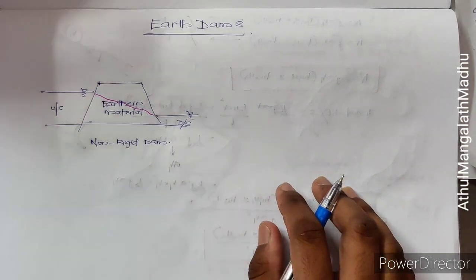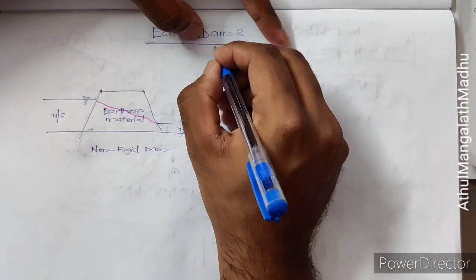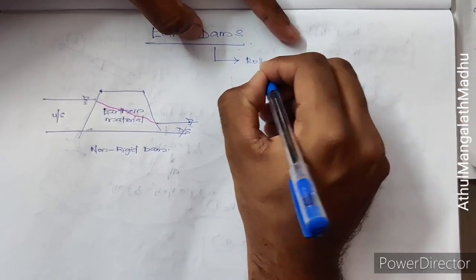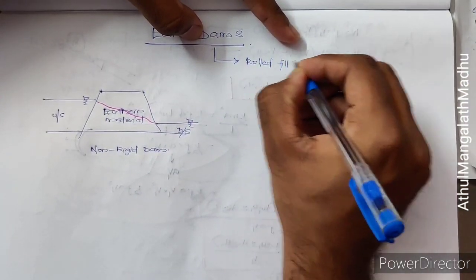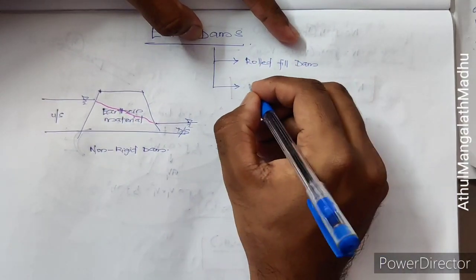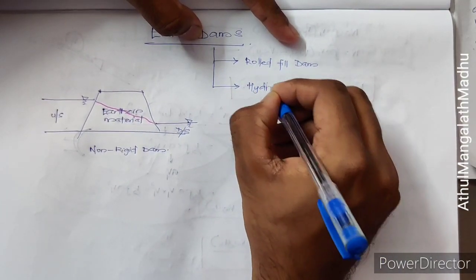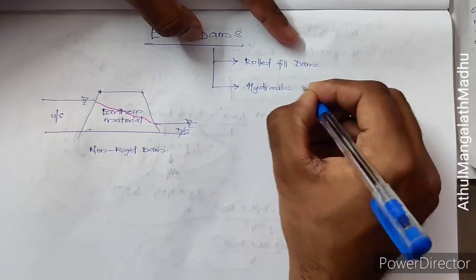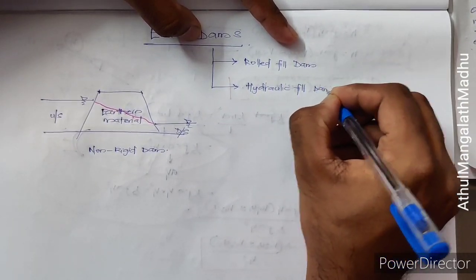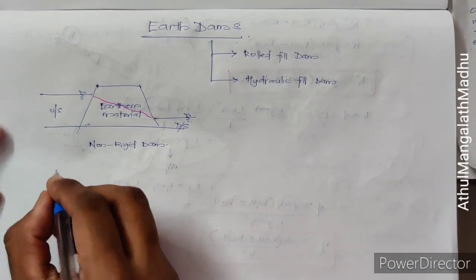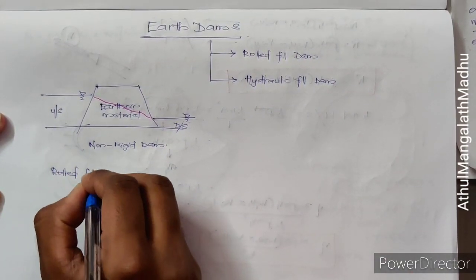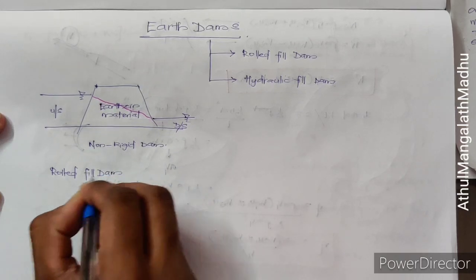There are different types of earthen dams. One classification divides them into rolled fill dams and hydraulic fill dams. We'll be explaining each one by one, starting with the rolled fill dam.